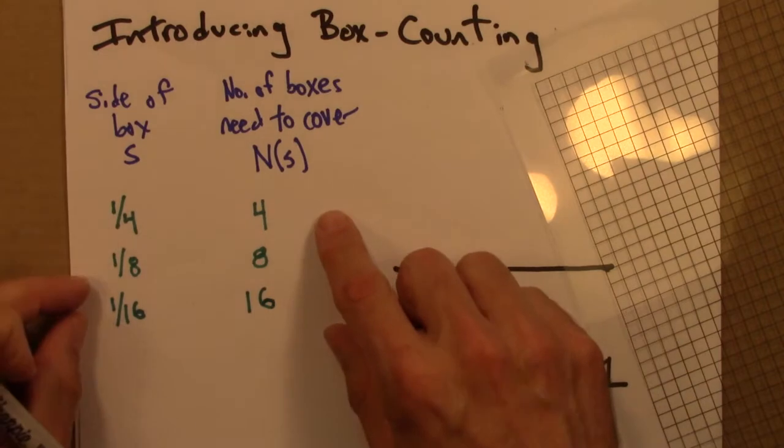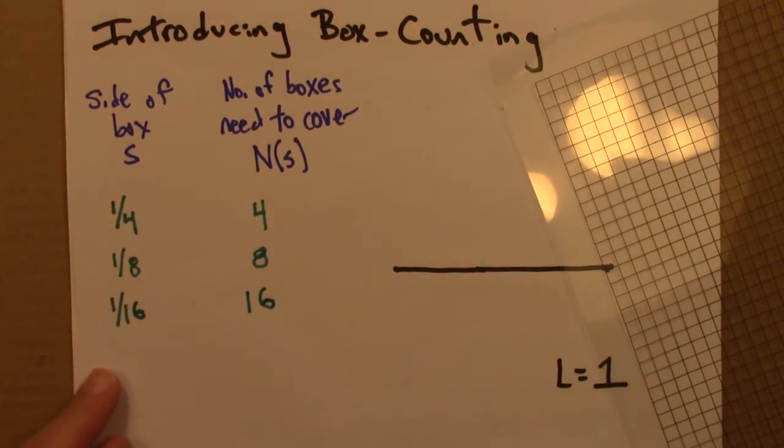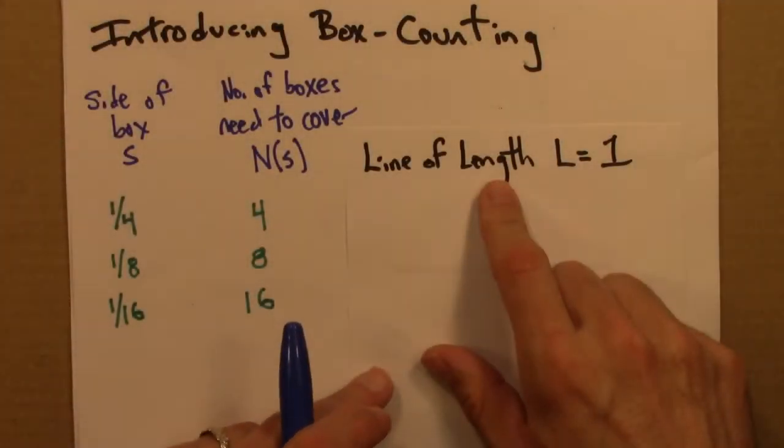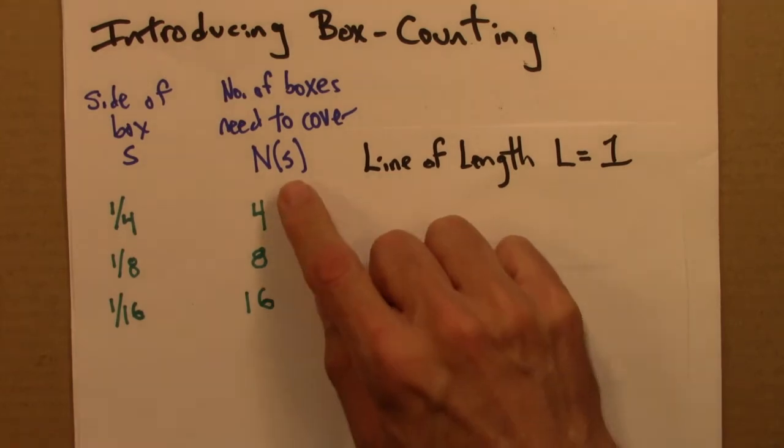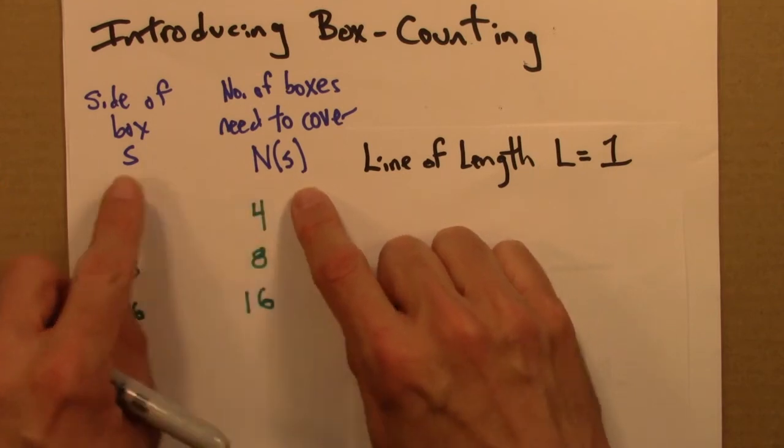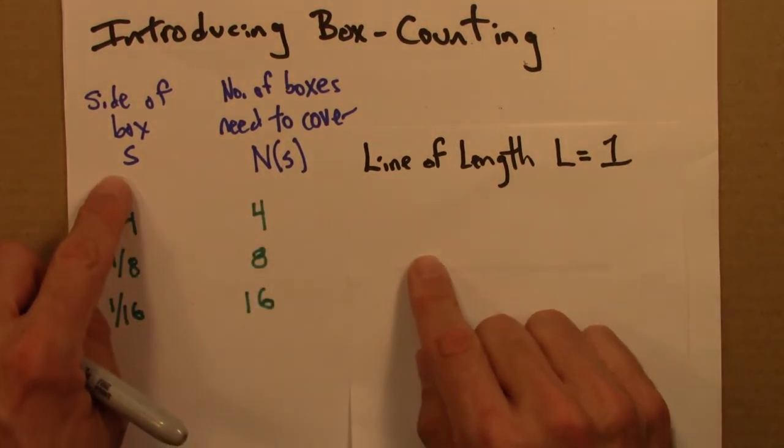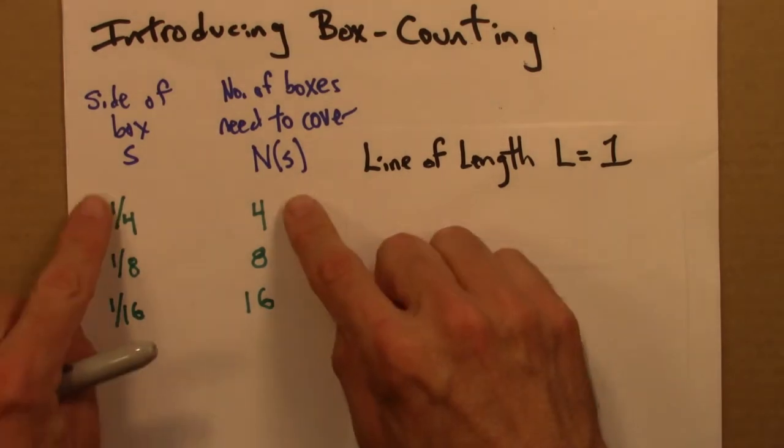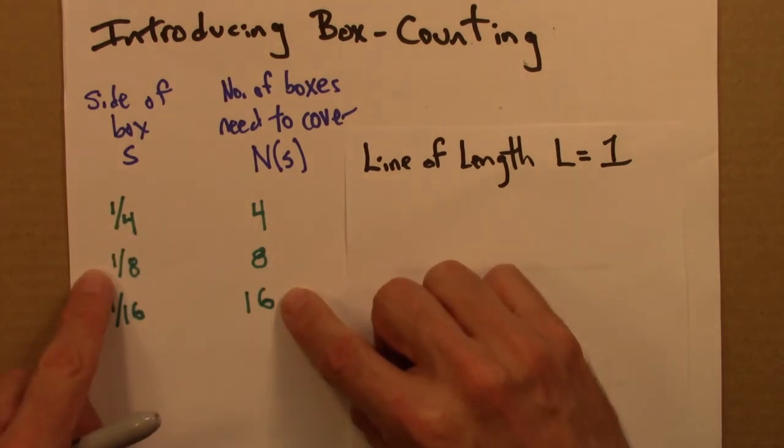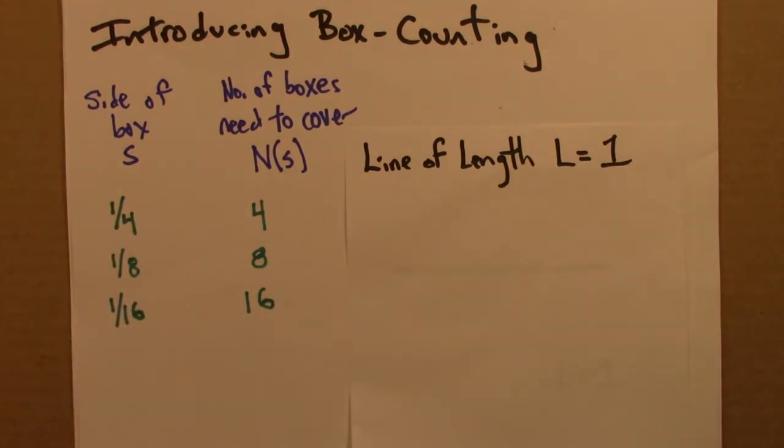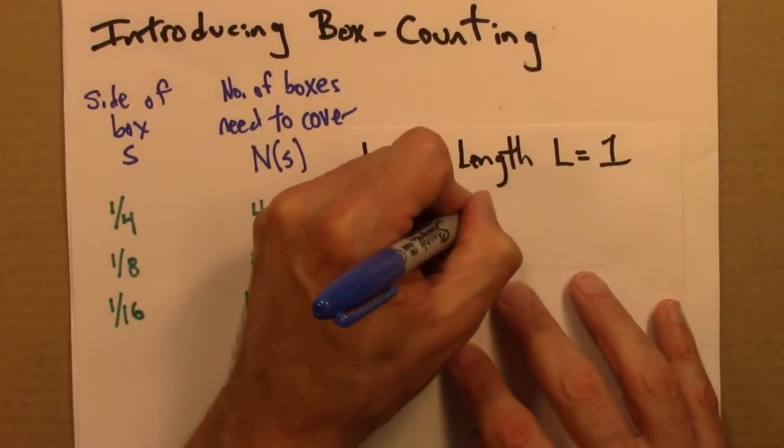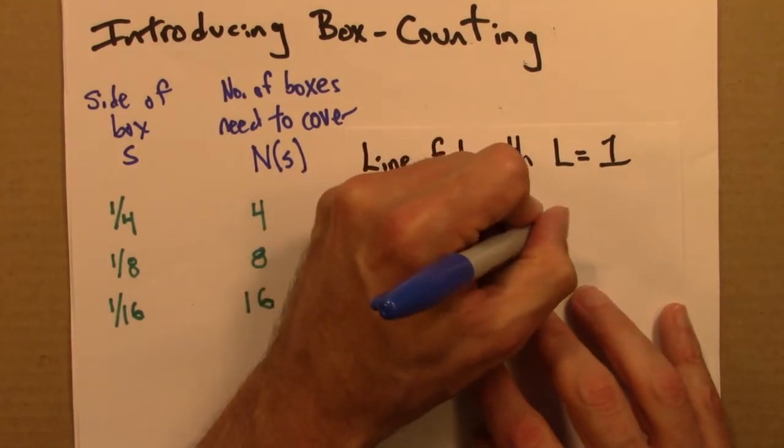And so, now the question is, what does this mean? What are we going to do with these numbers? So, what I'd like to do is come up with an equation that relates N of S to S. The number of boxes needed to cover a shape. How does that depend on S, the side of the box? So, if we look at this, we can see a nice relationship. There's a four and a one over four. Eight, one over eight. Sixteen, one over sixteen. And that suggests to me the following.